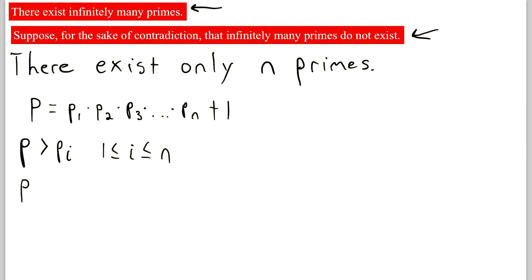Thus, we know that P is not equal to any prime. So P does not equal any prime Pi for this same range of i values. So since P isn't equal to any of these primes, and these are all of the prime numbers, we know that P isn't prime.